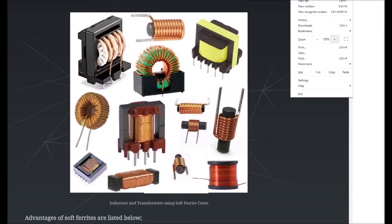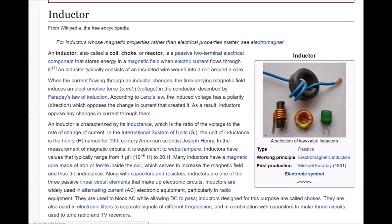Now I will rely on the Wikipedia definition. An inductor, also called a coil, choke, or reactor, is a passive two-terminal electrical component that stores energy in a magnetic field when electric current flows through it. An inductor typically consists of an insulated wire wound into a coil around a core. When the current flowing through an inductor changes, the time-varying magnetic field induces an electromotive force in the conductor, described by Faraday's law of induction. According to Lenz's law, the induced voltage has a polarity which opposes the change in current that created it.